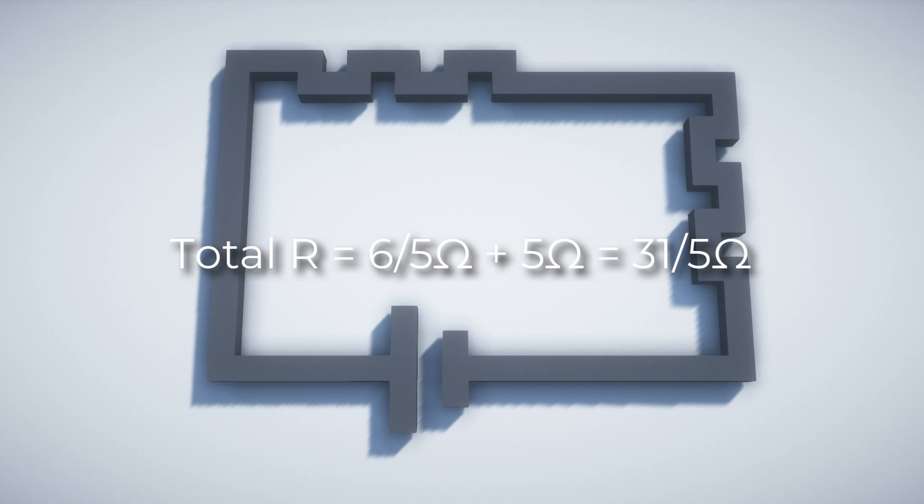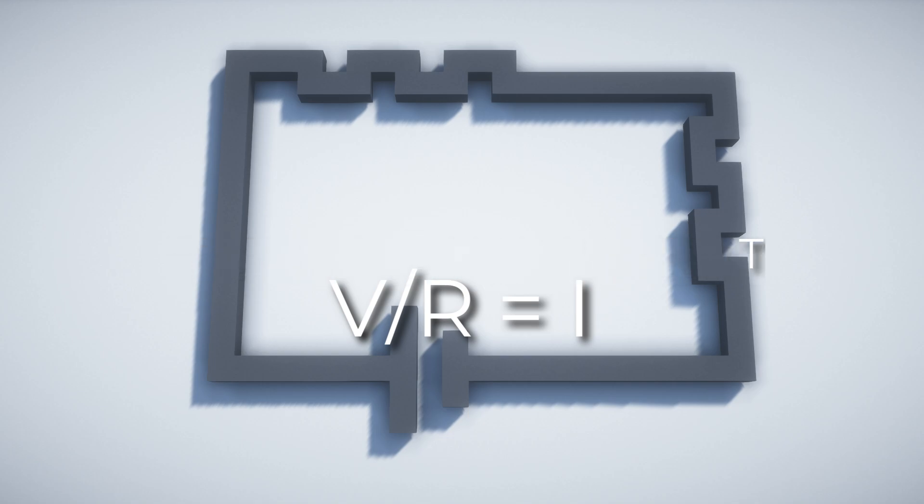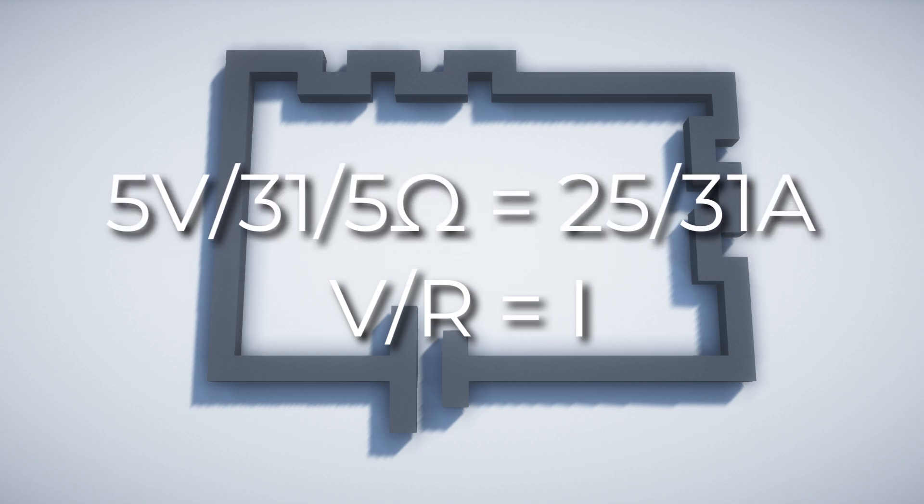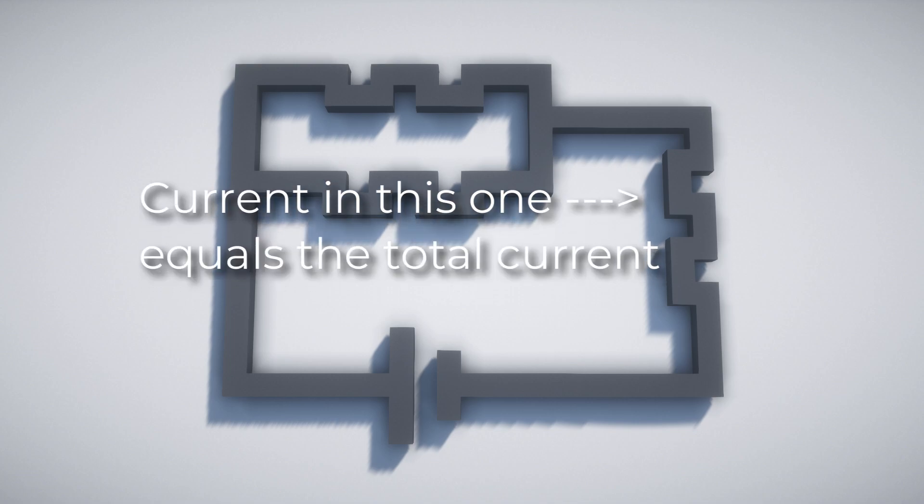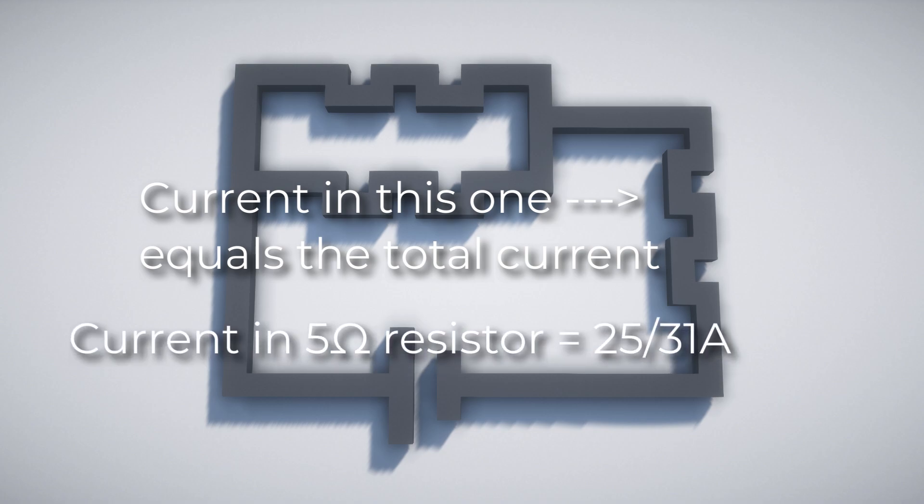So then we can find the current of the whole system. By using Ohm's law, V equals IR, we can turn that into V divided by R equals I, and that gives us 5 divided by 31 divided by 5, which equals 25 divided by 31 amps as the total current. Now since we're finding the current in each resistor, we actually already know one of the answers now. Current in all the resistors are the same in a series circuit, so that 5 ohm resistor from before, that current is 25 over 31 amps.